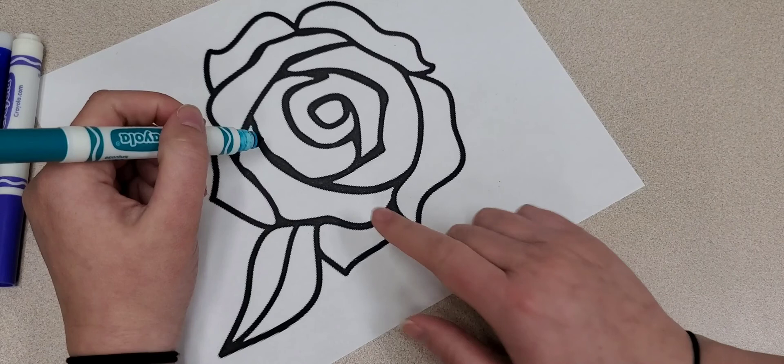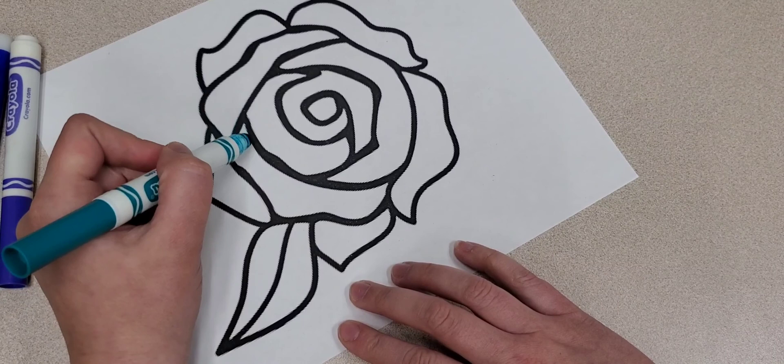So what I'm going to do is I'm going to go ahead and take my marker and I'm going to figure out, let's say I want to start with this petal right here. What I'll do is realize that this line is going to be my darkest spot.